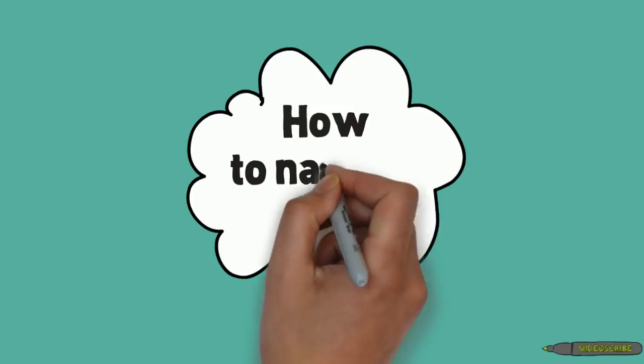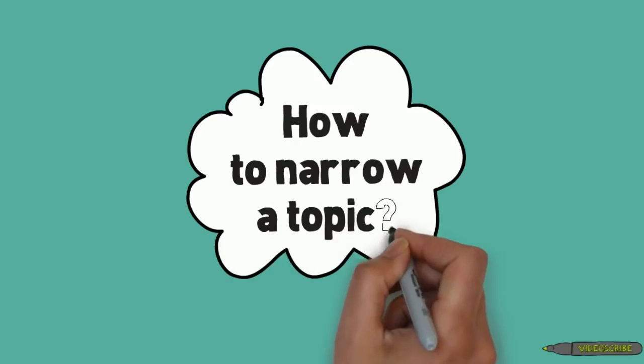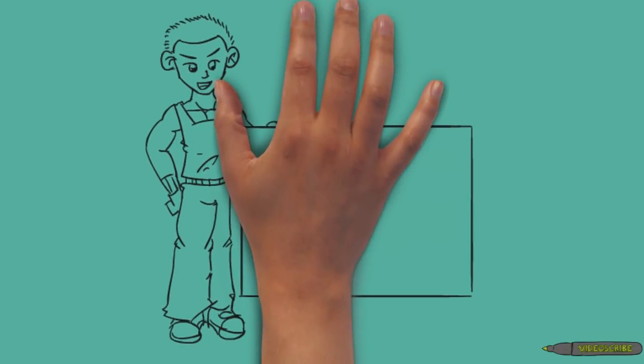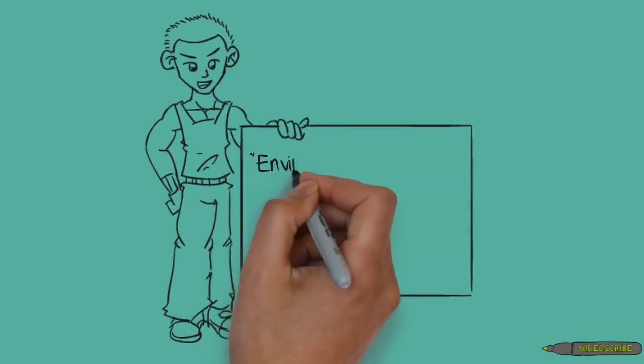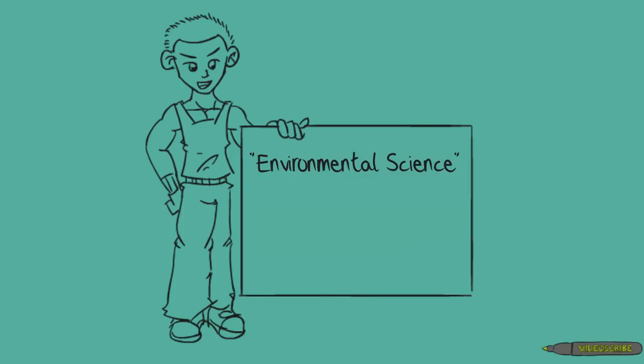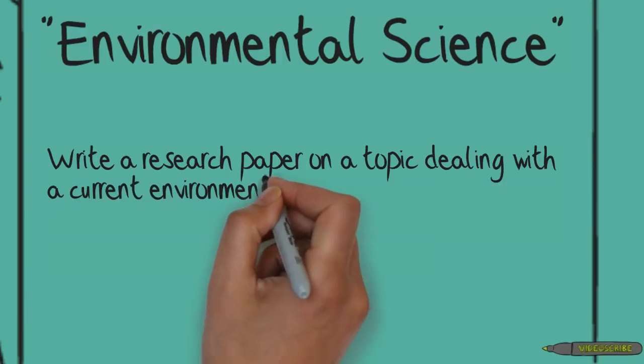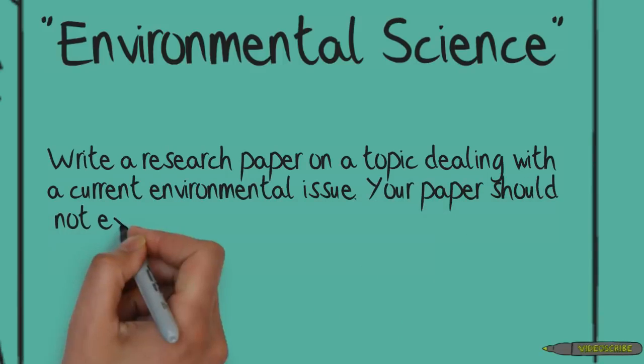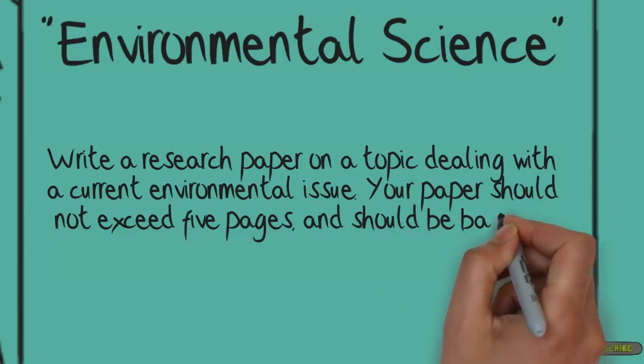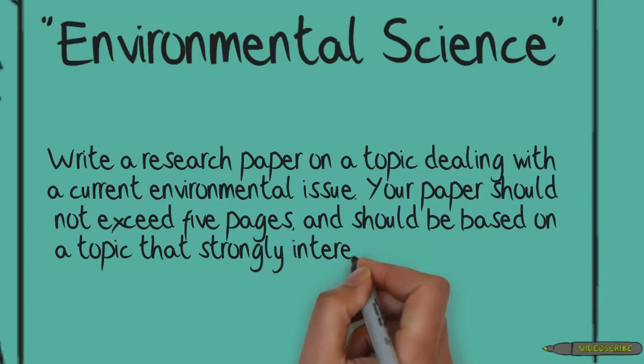Sometimes it can be really difficult to find a topic that is not too broad. Here are a couple of words of advice on what to do when your topic seems too broad. Let's say you are in an environmental science class. Your teacher gives you this assignment prompt: write a research paper on a topic dealing with a current environmental issue. Your paper should not exceed five pages and should be based on a topic that strongly interests you.